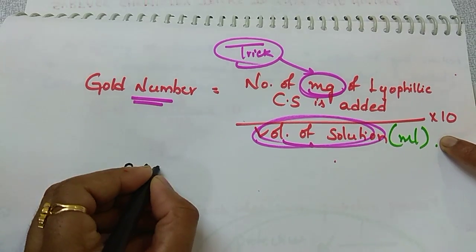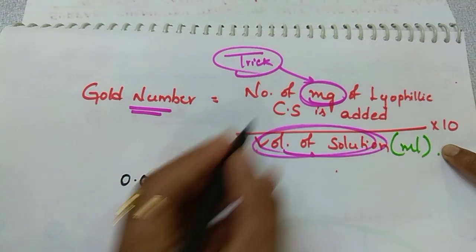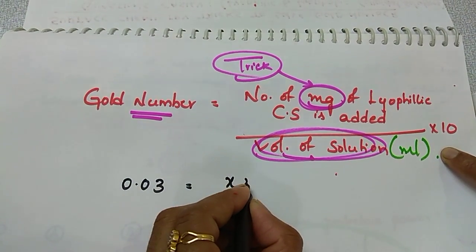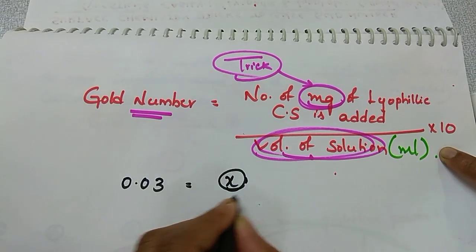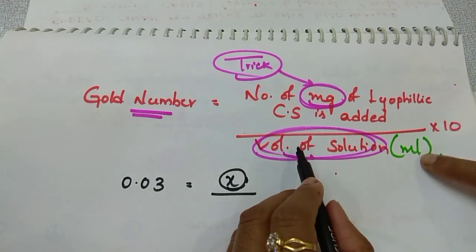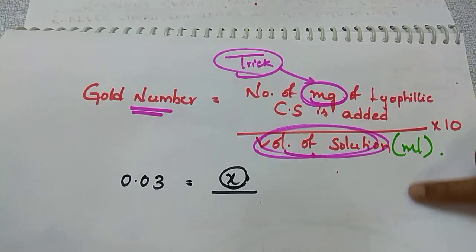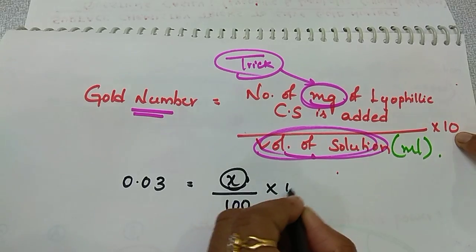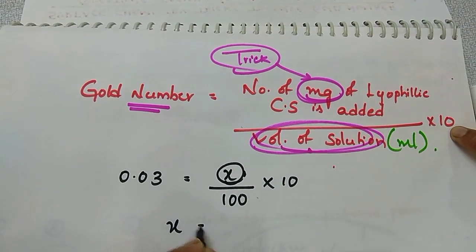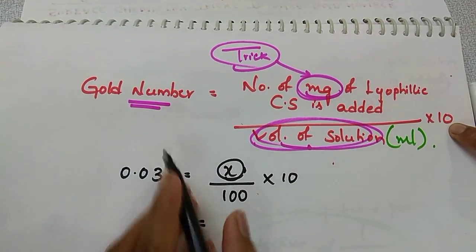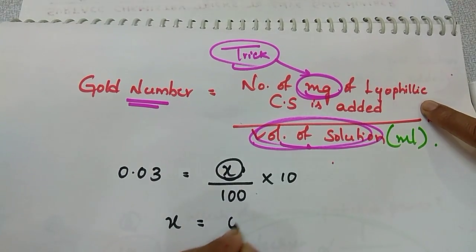Gold number is already given, that is 0.03. We want to find x milligrams - we don't know this x - divided by volume of solution. How much is given students? 100 ml is given, so take that 100 into 10.